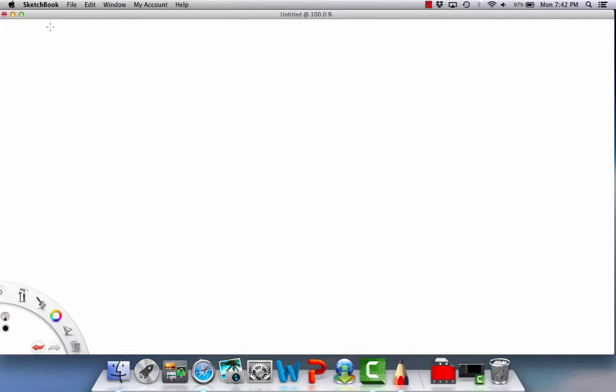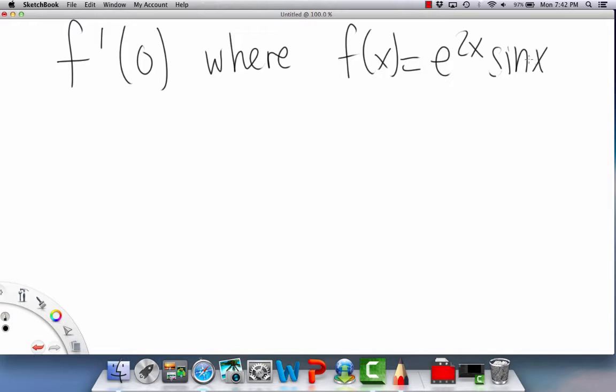Now, let's do an example. Cool. So, we have calculate f. Woo! That was a bad f. Hold on. Okay. So, calculate f prime of zero. Right? Where we have f of x. See, f of x equals e to the 2x. e to the 2x times sine of x. Okay?